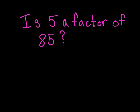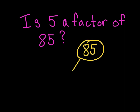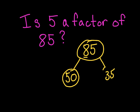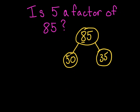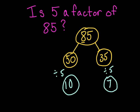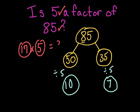Is 5 a factor of 85? Let's put 85 in our number bond. 5 can go into 80, and the closest we can get is 50. What's left over is 35. 5 can go into 50 ten times. Can 5 go into 35? Yes, it can — seven times. So 17 is the answer. Yes, 5 is a factor of 85, and 17 times 5 are both factors of 85.